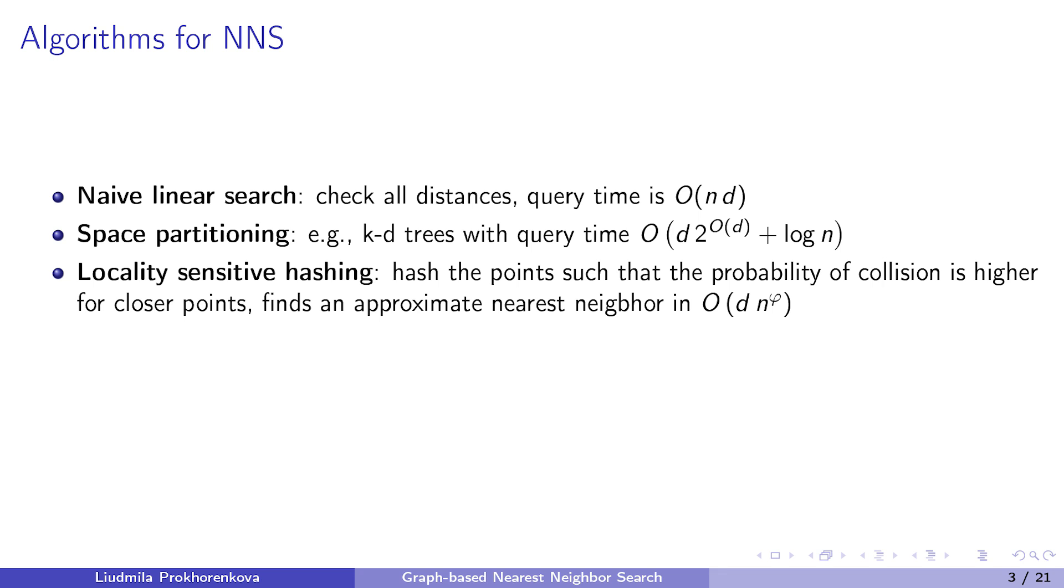When the dimension is large, the problem is often relaxed to approximate nearest neighbor search. And the most well-known algorithmic technique is the locality-sensitive hashing. The main idea is to hash the points such that the probability of collision is higher for closer points. Then, one can retrieve nearer neighbors for a query by hashing it and checking the elements in the same buckets. This approach is well studied theoretically and widely used in practical applications.